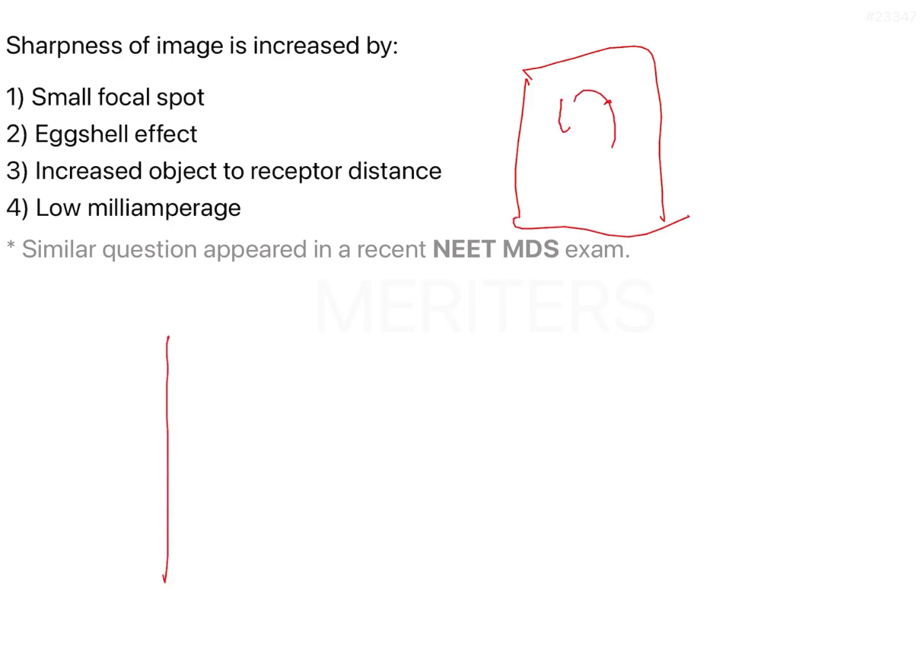What do you mean by sharpness? If I am having a radiograph and I have to visualize the edge of a tooth, I am supposed to be able to identify this area which is the edge as the edge.